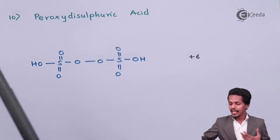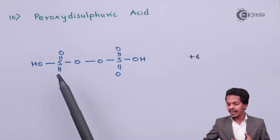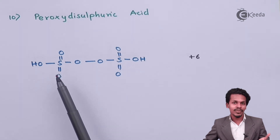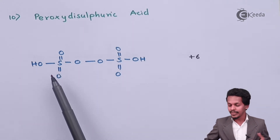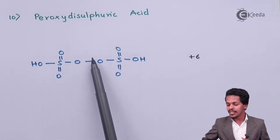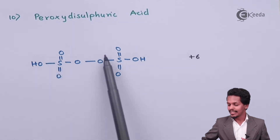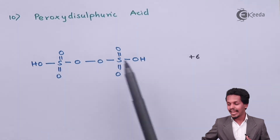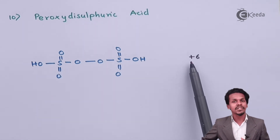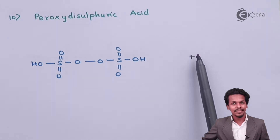The next is peroxydisulfuric acid, which is similar to oleum. The only difference is that instead of one bridging oxygen atom, there are two oxygen atoms connecting the two groups. The oxidation state of sulfur is +6.